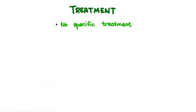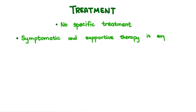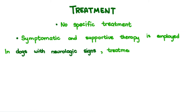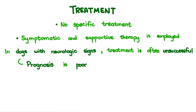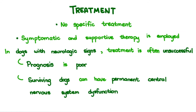There is no specific treatment. Symptomatic and supportive therapy is employed. In dogs with neurologic signs, treatment is often unsuccessful and prognosis is poor. Dogs surviving neurological signs of distemper can have permanent central nervous system dysfunction.